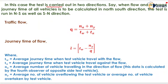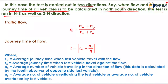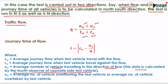The test is carried out in two directions. For example, when flow and average journey time of all vehicles is to be calculated in the north-south direction, the test is run in north-south as well as south-north direction. To determine the traffic flow Q, it equals (Na + Ny) divided by (Tw + Ta), where Na is the average number of vehicles travelling in the direction of flow, calculated by the fourth observer of the opposite-side test vehicle which counts vehicles moving from the opposite direction.